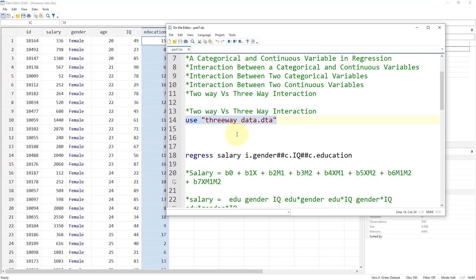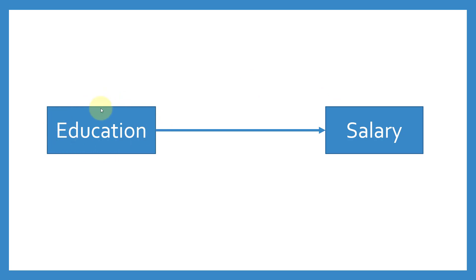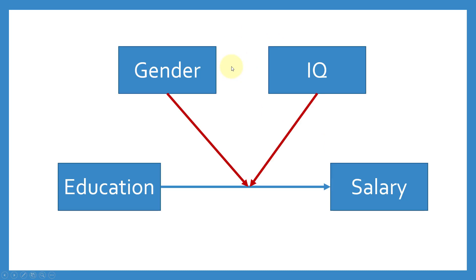When we say we want to do a three-way interaction, what does that mean? Let's say we have education as our independent variable and salary as the dependent variable — as education increases, salary increases. In previous videos on two-way interaction, we had a single moderating variable, like gender. But in three-way interaction, we have two different moderating variables — in this case, gender and IQ. The relationship between education and salary depends on both gender and IQ.